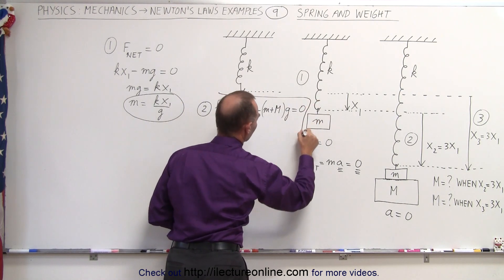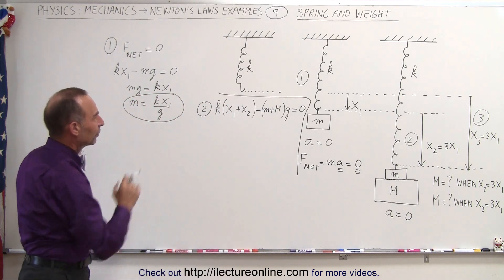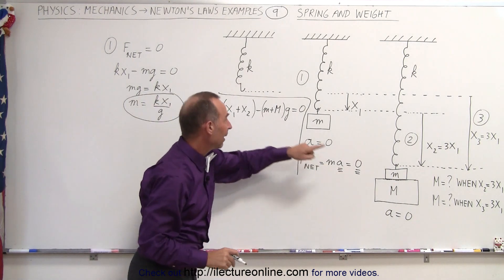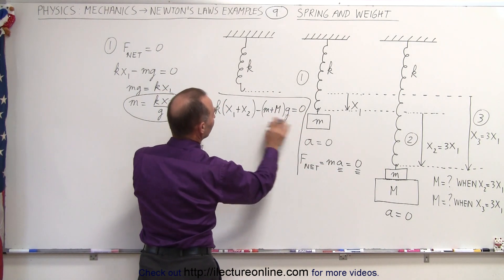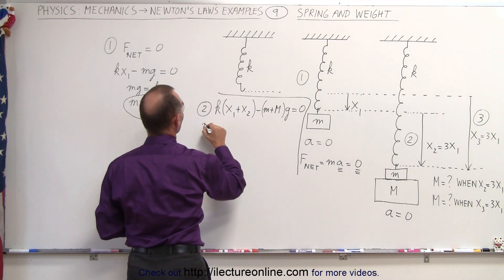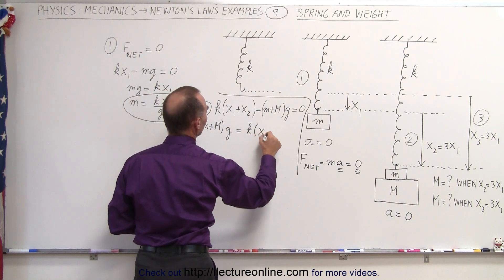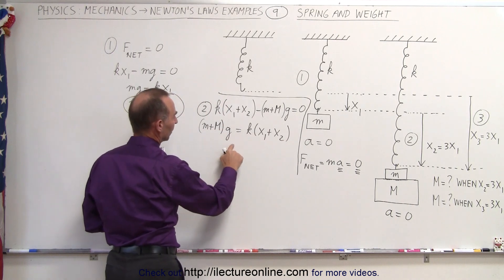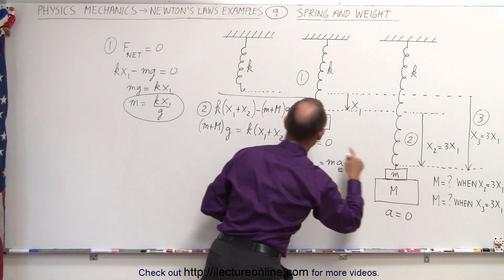Let me put a line here so we don't get confused. The net force equals zero, and what we're trying to do is find the value for big M. Moving that to the other side and turning the equation around gives us: little m plus big M times g is equal to k times x1 plus x2. First we multiply this out, and since x2 is equal to 3 times x1, we'll replace that.